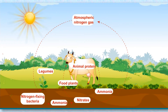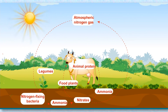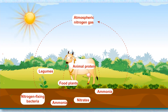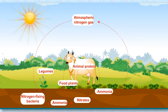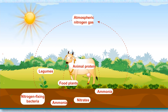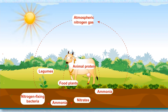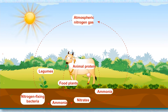Nitrogen fixation and nitrogen cycle: Nitrogen is found in many essential nutrients such as proteins, vitamins, and chlorophyll. Since plants cannot absorb nitrogen from air, it has to be converted into water-soluble substances called nitrates, which are absorbed by the plants through roots. This process is called nitrogen fixation and is carried out by some bacteria and blue-green algae. Leguminous plants such as pea and soybean have the bacteria Rhizobium in their root nodules, which carry out nitrogen fixation and convert nitrogen gas into nitrate compounds for plant growth.